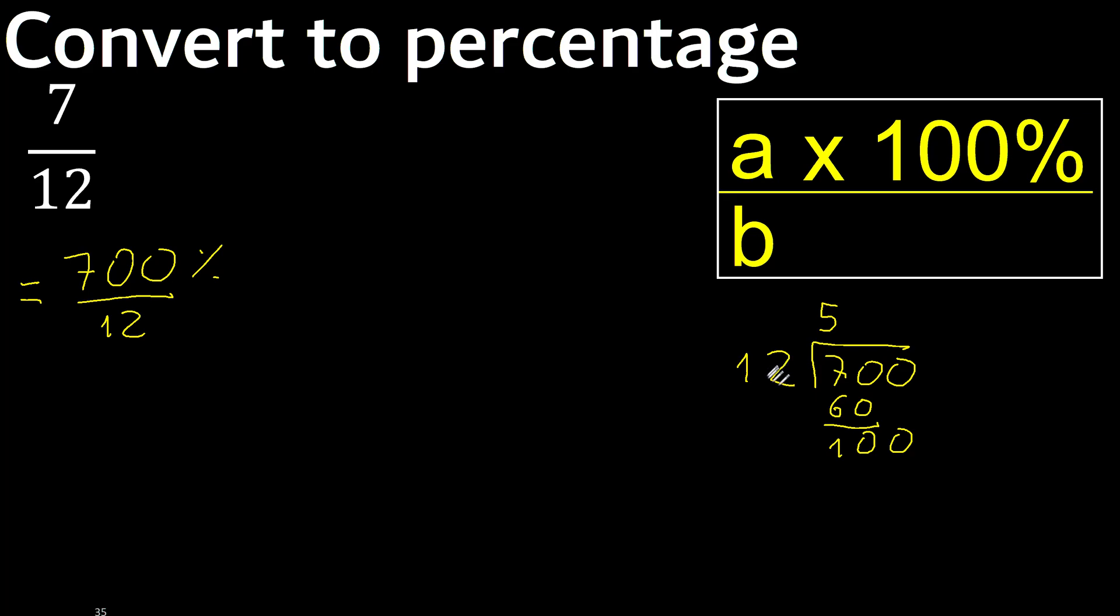100. 12 multiplied by 9 is greater. 12 multiplied by 8 is 96. Subtract, next.